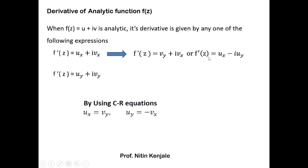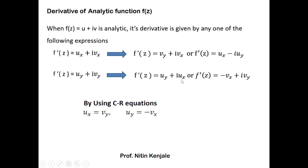Similarly, f'(z) can be written as ux minus i·uy, where vx is replaced by minus uy using the CR equation. f'(z) can also be written as uy plus i·ux, where vy is replaced by ux from the CR equations. Also, f'(z) can be written as minus vx plus i·vy, where uy is replaced by minus vx using CR equations. Any one of these forms can be used to find the derivative of an analytic function f(z) equal to u plus iv.